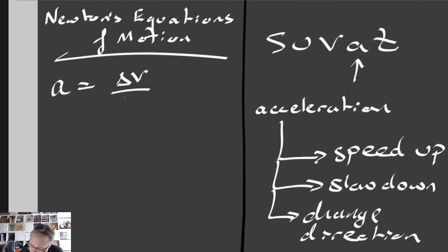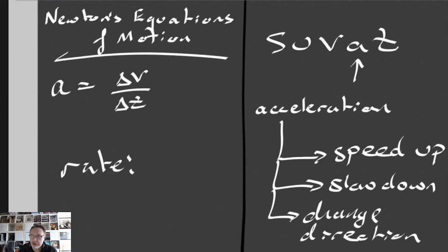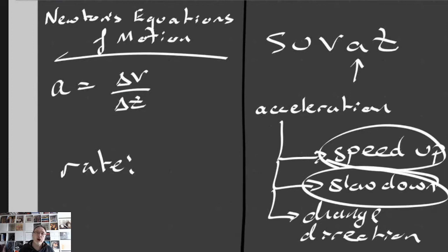The definition of acceleration is the change in velocity over the time taken. Technically, I would say that as the rate of change of velocity, because the word 'rate' means with respect to time. When the velocity of an object changes — not the speed, the velocity — that's what we call acceleration. Velocity is speed in a certain direction, so because it's a vector quantity, it can also change direction. Hence acceleration is to speed up, to slow down, or to change direction.